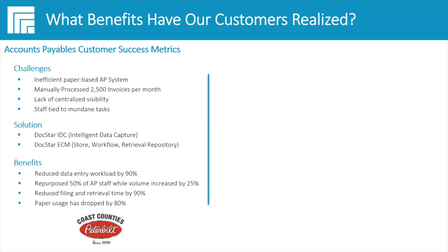To give some perspective on scale: they started at about 2,500 invoices per month. DocStar sees benefits starting out at even 500 invoices per month, and they have customers doing millions of documents a year through their process.